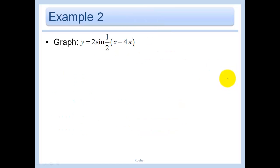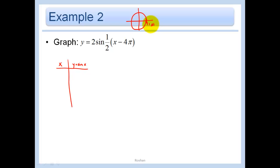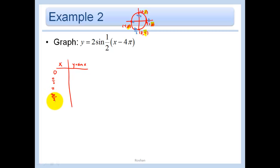Let's do the same thing in this problem, but here we have sine, so we'll start with sine. Quick little unit circle. Remember, since we're doing sine we're going to be dealing with the y-coordinate. Our key five points are 0, π/2, π, 3π/2, and 2π, and since we're doing sine I just highlighted what we're dealing with.